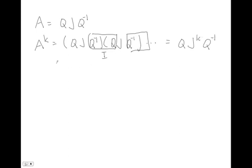So the solution for A to the k is something that's relatively easy for us. We can figure out its Jordan form Q J Q inverse, then raise the Jordan form to the k power, and then as the last step just pre and post multiply by Q and Q inverse.